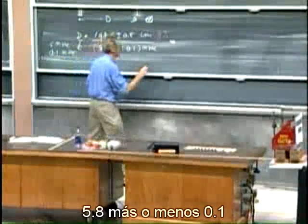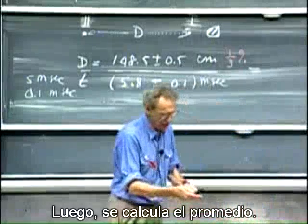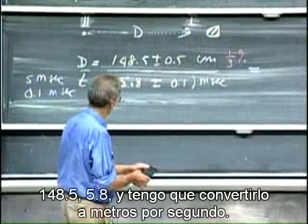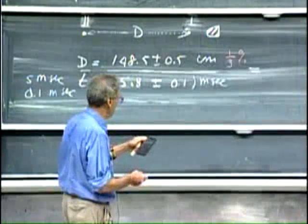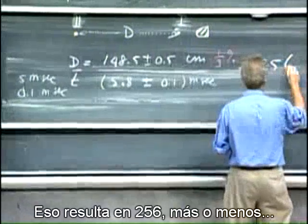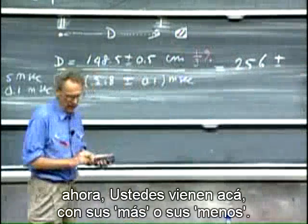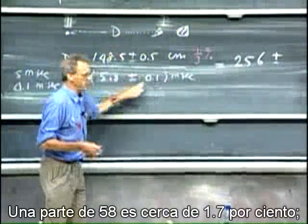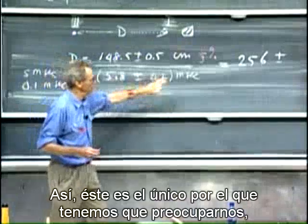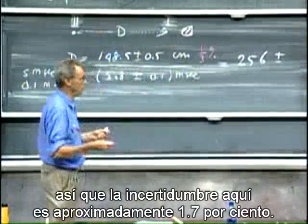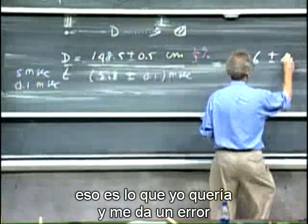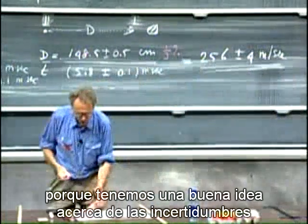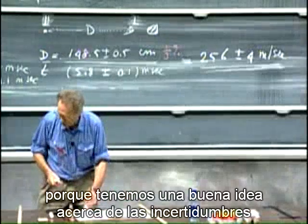5.8 plus or minus 0.1 milliseconds. So out comes the average speed — or velocity, it's the same thing in this case. 148.5 centimeters divided by 5.8 milliseconds, converted to meters per second, gives 256 meters per second plus or minus some uncertainty. The distance has a one-third percent error — negligible. One out of 58 is about 1.7 percent, so that is the only uncertainty we have to worry about. The uncertainty is about 1.7 percent, less than two — that's what I wanted. That gives an error of about four meters per second. And you see it's only meaningful because we have a good idea about the uncertainties in the measurement.